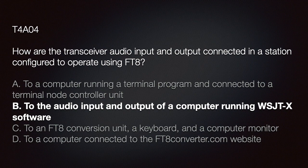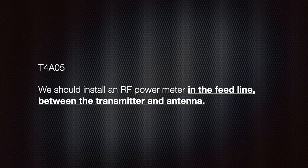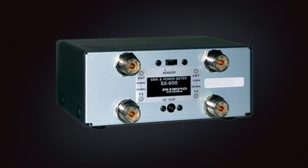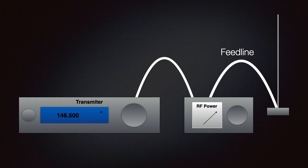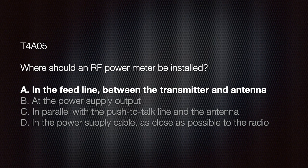We should know that an RF power meter should be installed in the feed line between the transmitter and the antenna. The top connector on the SX-600 is labeled 'antenna' and the lower one is labeled 'TX' for transmitter. The test question is: where should the RF power meter be installed? A) In the feed line between the transmitter and the antenna, B) at the power supply output, C) in parallel with the push-to-talk line and the antenna, D) in the power supply cable as close as possible to the radio. The correct answer is A.